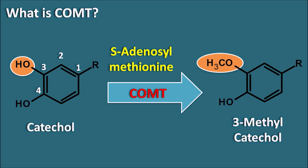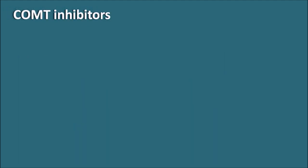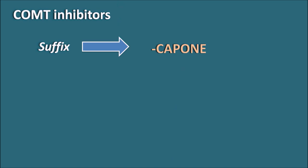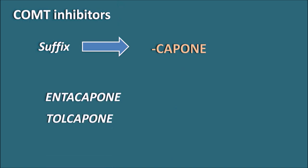Today, let us see how the inhibitors of this COMT enzyme, commonly known as COMT inhibitors, are useful in the treatment of Parkinson's disease — how they are acting in this neurodegenerative disorder, how they are given, and what are the possible side effects. COMT inhibitors can be identified by their suffix; they have a common suffix '-capone'. We have two drugs in this category: entacapone and tolcapone.